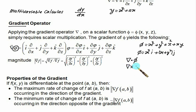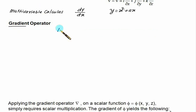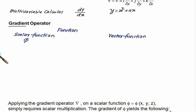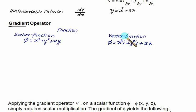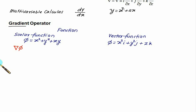If we use del dot with a vector function, it is called divergence, and del cross gives curl. These two operators are used for vector-valued functions, while grad is used for scalar-valued functions. Scalar functions such as x² + y² + x have no i, j, k terms and are independent of direction. Vector functions such as x²i + y²j + zk do contain i, j, k terms. So we have two types: scalar functions and vector functions, and the gradient operator is only applicable to scalar functions.